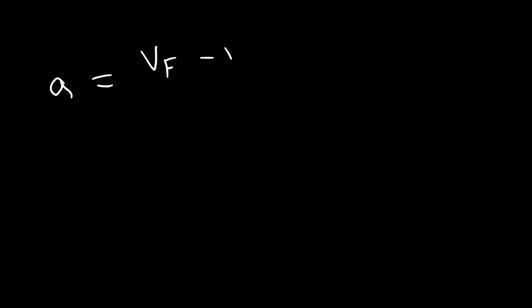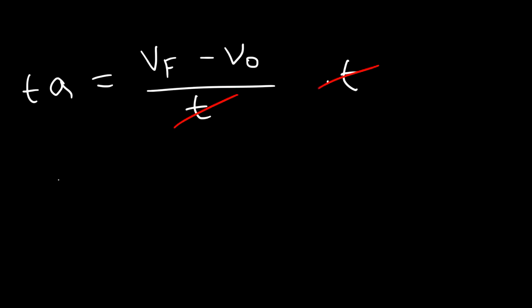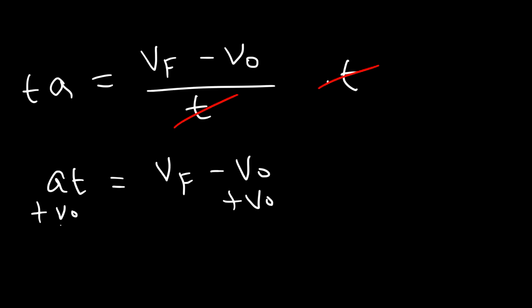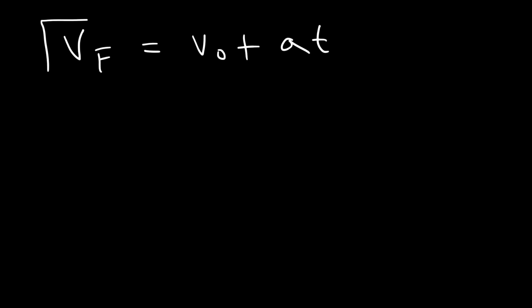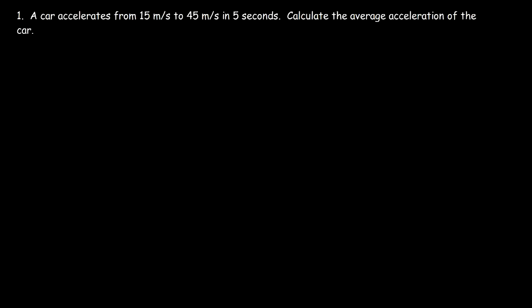Starting from the acceleration equation, there's another useful equation. Multiplying both sides by t gives: at = v_final minus v_initial. Adding v_initial to both sides: v_final = v_initial + at. Anytime you want to calculate the final speed for an object undergoing accelerated motion, you can use this equation — but the acceleration must be constant.